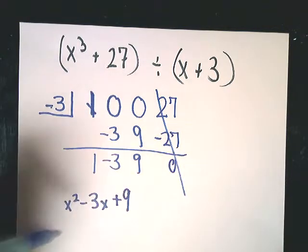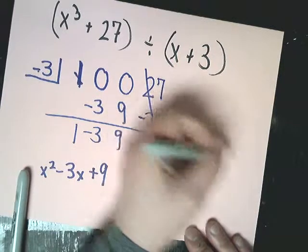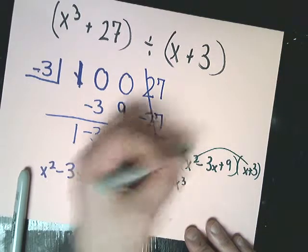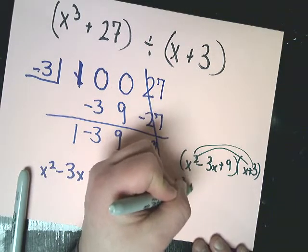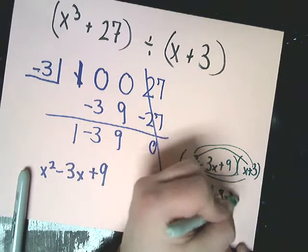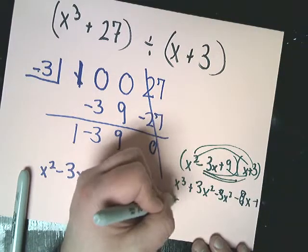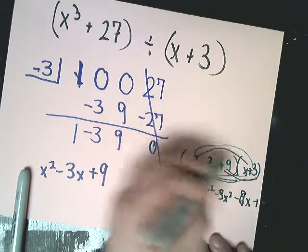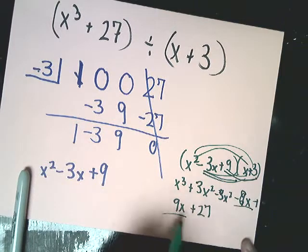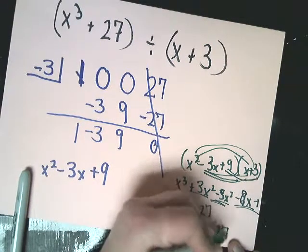And can you test it? Absolutely. Go back in. Just do a little multiplying out. x squared terms cancel each other out. So all I'm left with is x to the third plus 27. So it is correct.